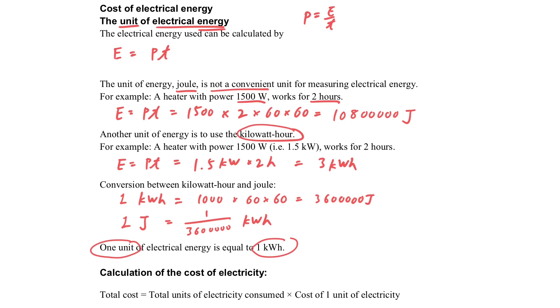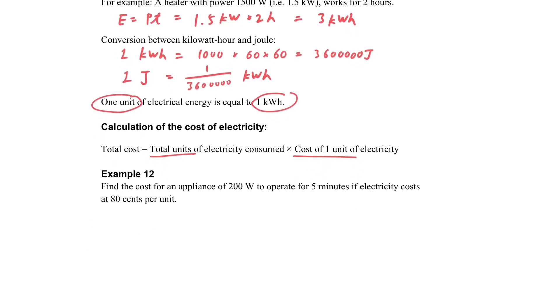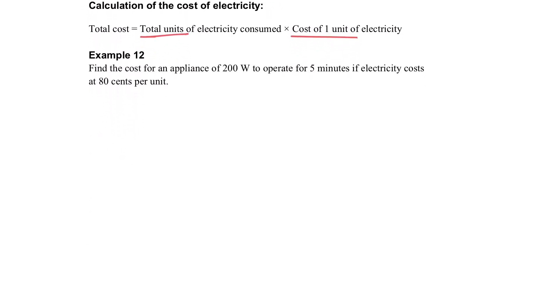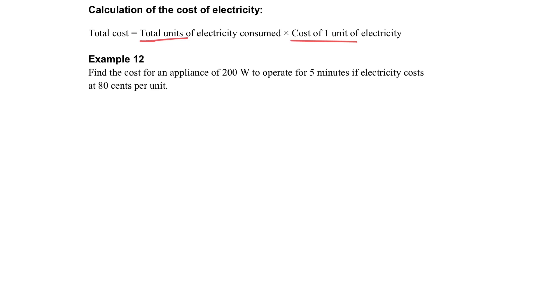One unit of electrical energy equals one kilowatt-hour. For our electrical bill, it shows the total units we use and the cost of one unit. Simply multiply the two numbers together to get the total cost of the electrical bill.